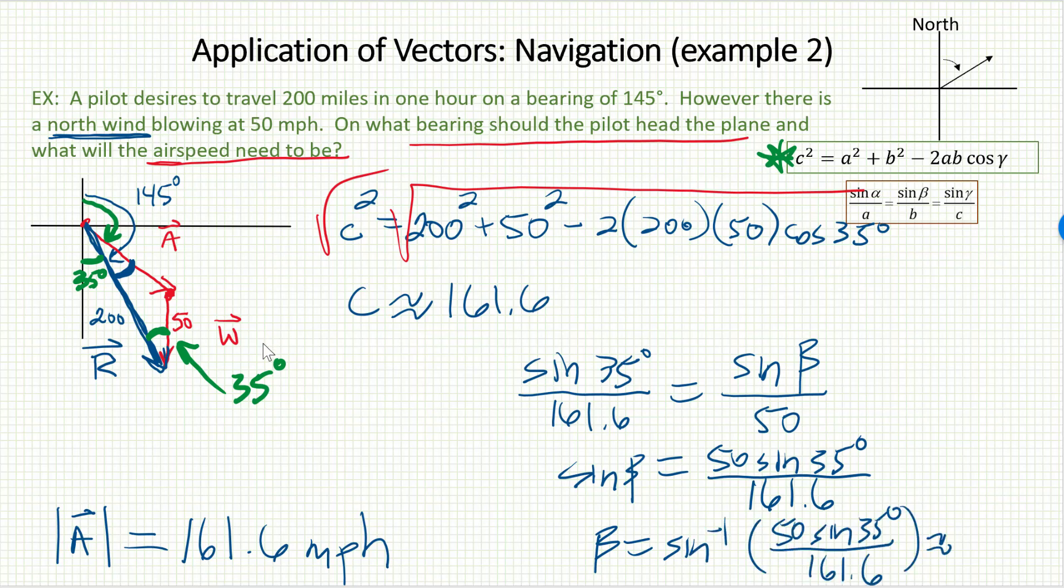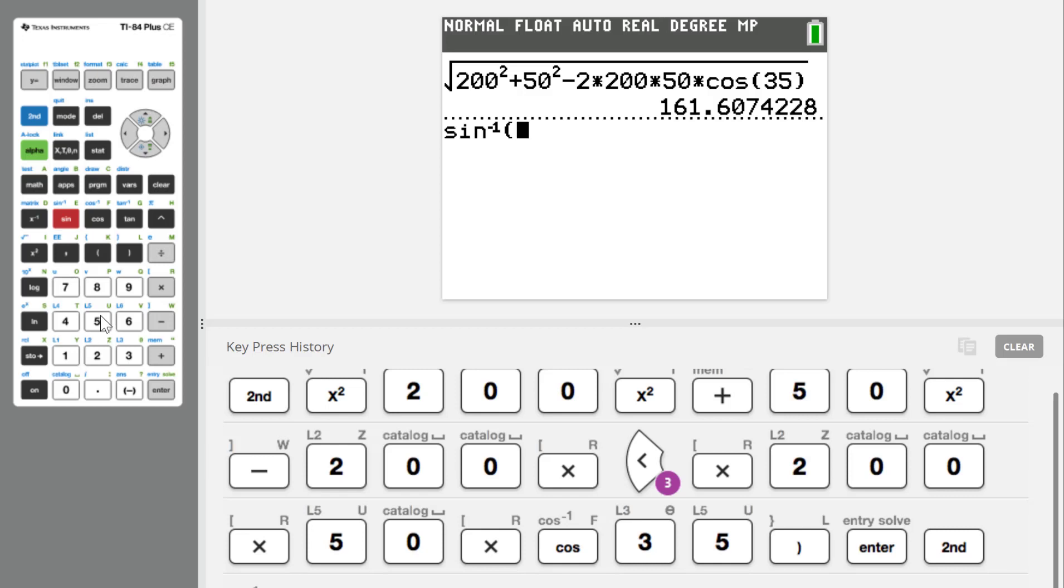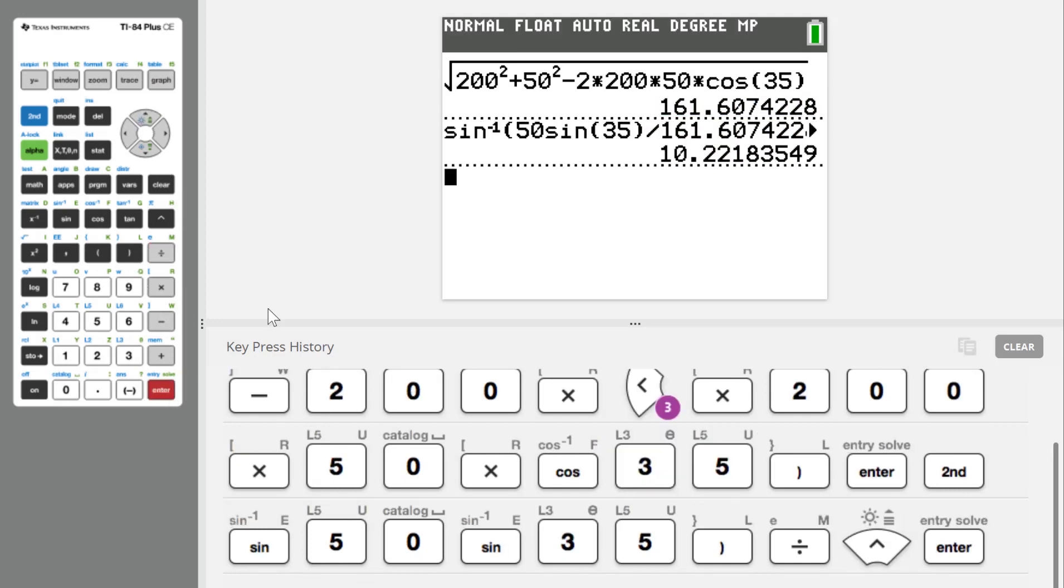Then we'll head to the calculator. So sine inverse of 50 sine 35 divided by the 161 number, which I'll grab, and that gives me about 10.2 degrees.